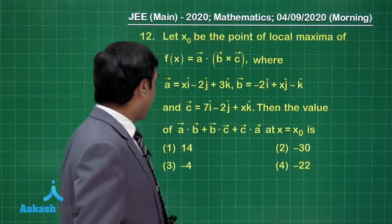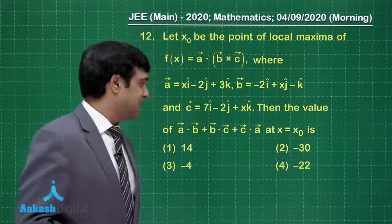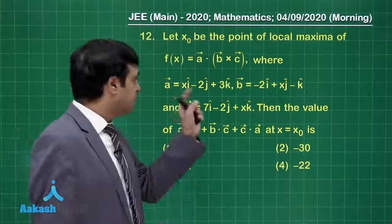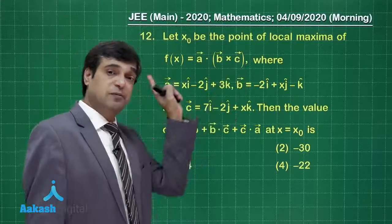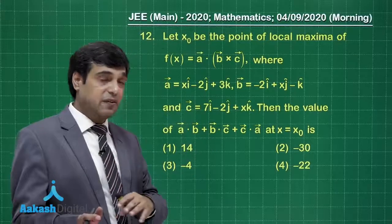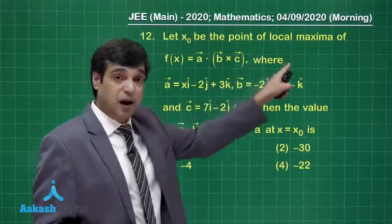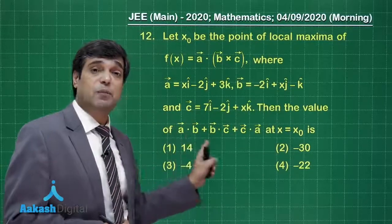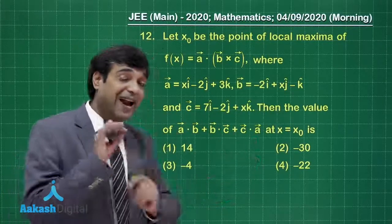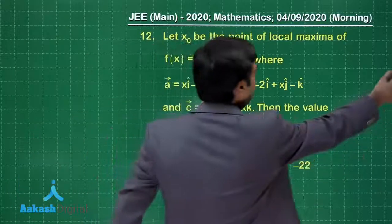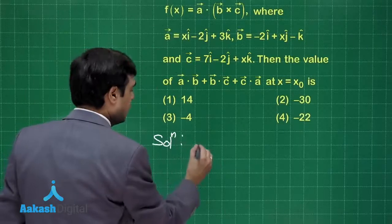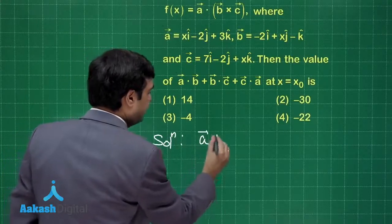Then the value of a dot b plus b dot c plus c dot a at x equals x naught. Question is clear: first we will be finding a dot b cross c, that's the function, then we will find the derivative, we will check the maxima which is x naught, then we will find this term a dot b plus b dot c plus c dot a at the value x naught.